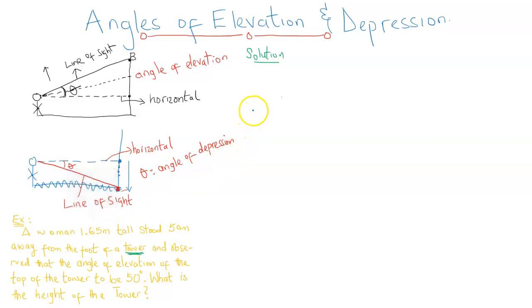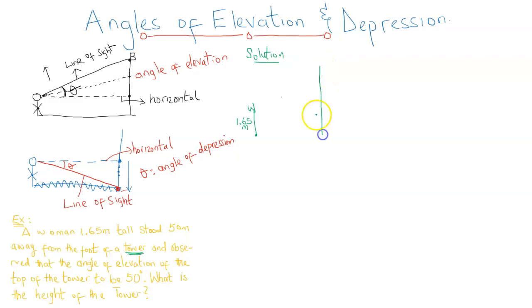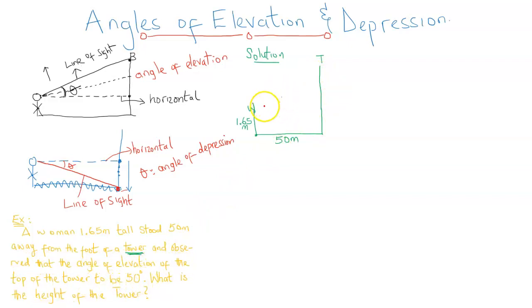I am just going to represent the woman with a straight line. This is 1.65 meters — I could call this W. This is the woman. She stands 50 meters away from the foot of a tower. The tower is a very tall building, and this can represent the tower — I am going to call the top T. Both the woman and the tower are on the same horizontal ground, so they are going to have a horizontal distance of 50 meters. She observed that the angle of elevation of the top of the tower is 50 degrees. This is the woman's initial line of sight, because she is only going to be able to see these parts of the tower.